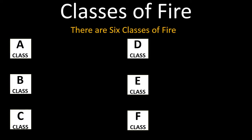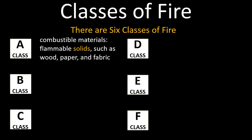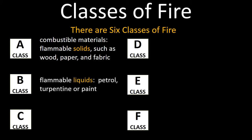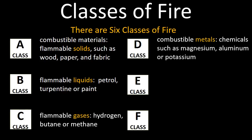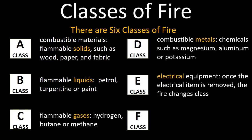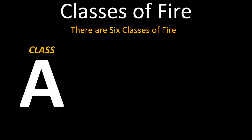There are six classes of fire: Class A, Class B, Class C, Class D, Class E, and Class F. Class A fire consists of combustible materials such as flammable solids, wood, paper, and fabrics. Class B includes flammable liquids such as petrol, turpentine, or paint. Class C includes flammable combustible gases such as hydrogen, butane, or methane. Class D includes combustible metals such as magnesium, aluminium, or potassium. Class E includes electrical equipment — once the electrical item is removed, the fire changes class. And Class F includes cooking oils, typically a chip pan fire.